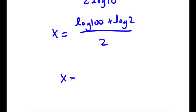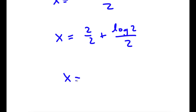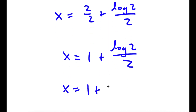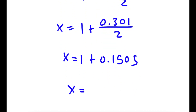Since log 100 equals 2, I have 2 plus log 2 over 2, which is the same as 2 over 2 plus log 2 over 2. 2 over 2 is 1, so I have 1 plus log 2 over 2. Using a calculator, log 2 is approximately 0.301, divided by 2 gives 0.1505. So 1 plus 0.1505 equals 1.1505, and that is my answer.